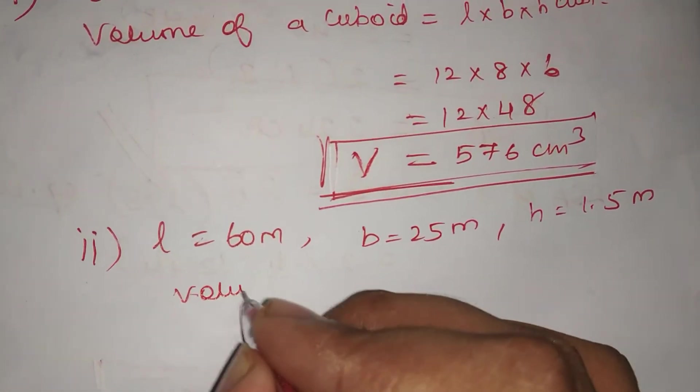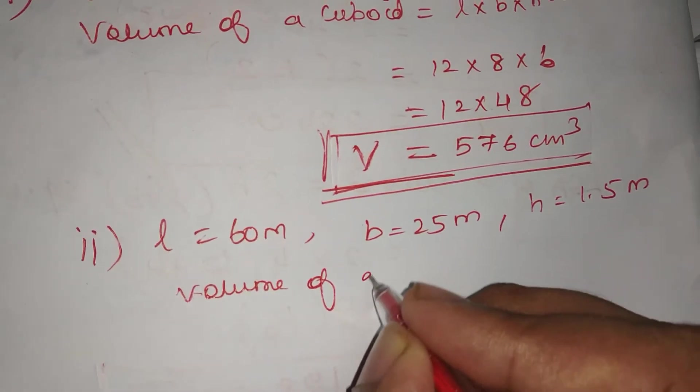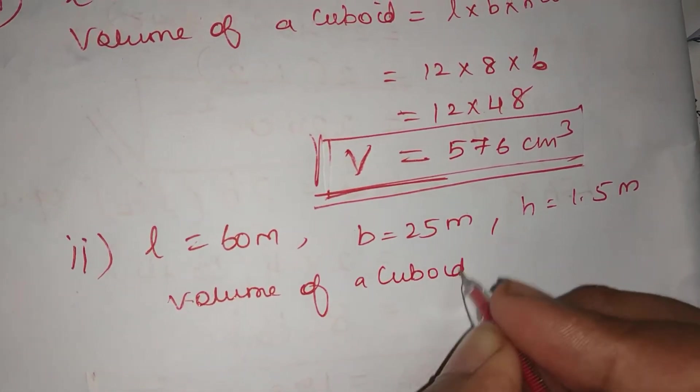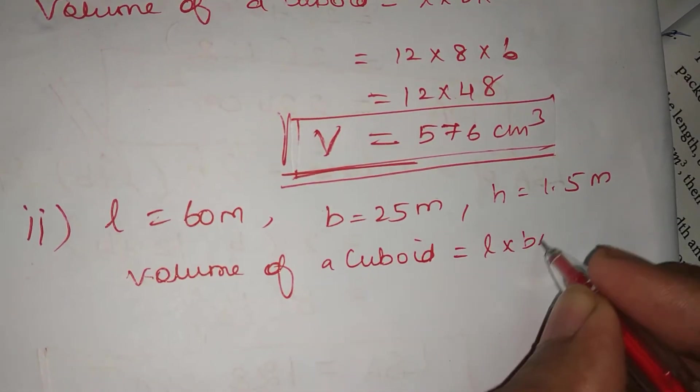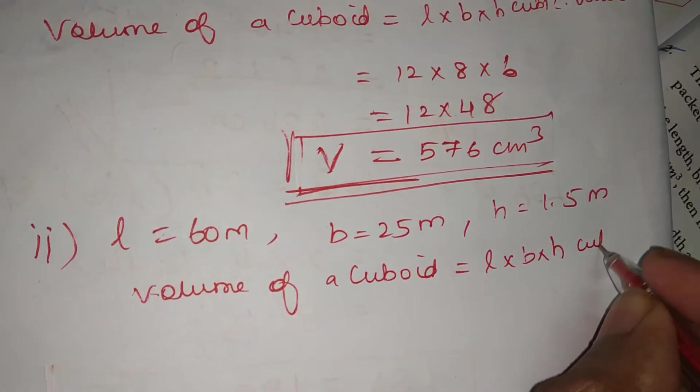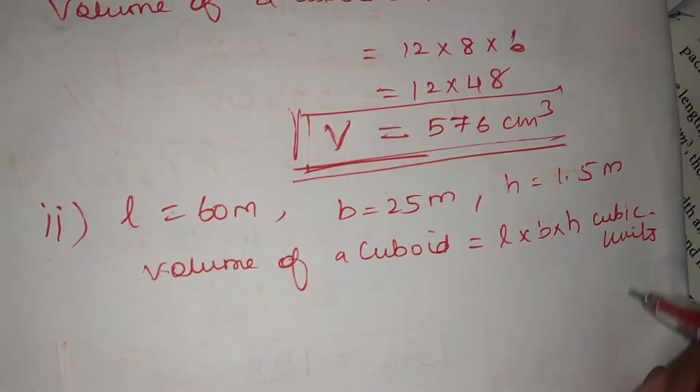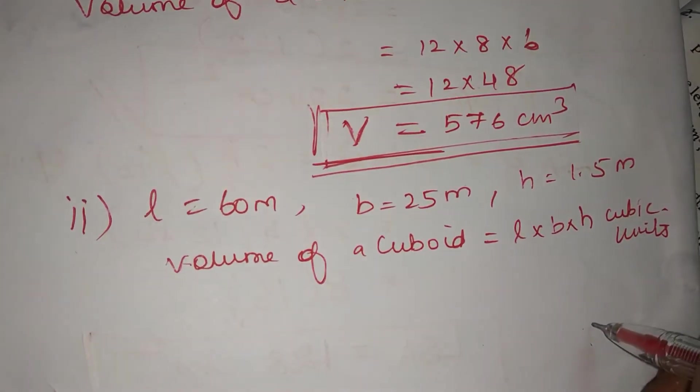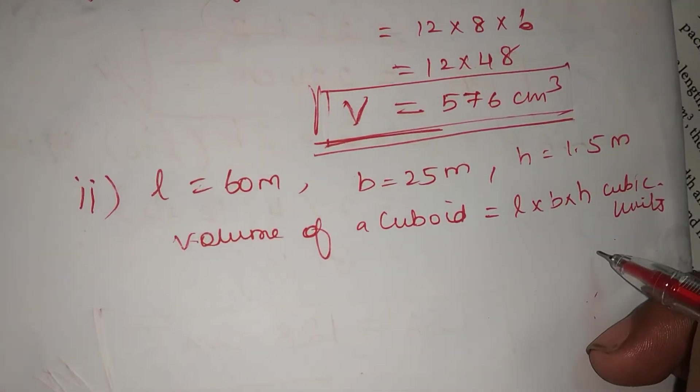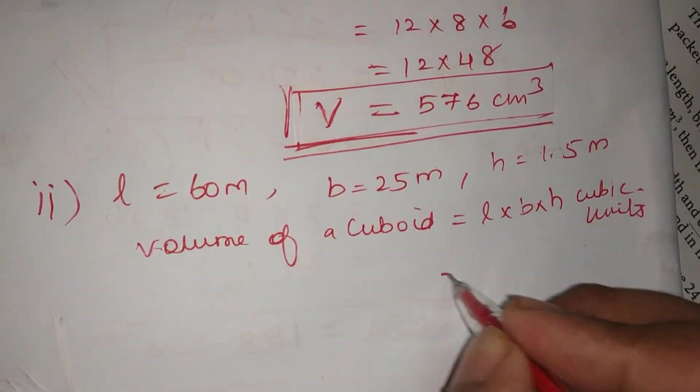Volume of a cuboid formula is L into B into H cubic units. Volume is cubic units, area is square units, perimeter is units.